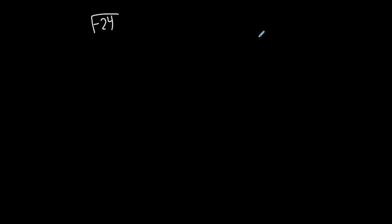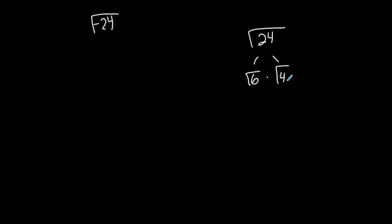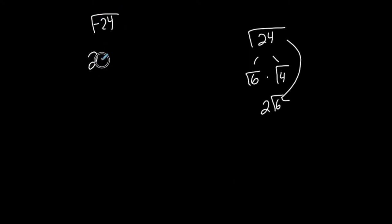These can get more complicated. For example, the square root of negative 24. Let's talk about the square root of 24 first, because 24 is not a perfect square. However, 24 is also the square root of 6 times 4. Since 4 is a perfect square, it can simplify further: the square root of 4 is 2, so the square root of 24 is 2 times the square root of 6. For the square root of negative 24, that negative comes out and becomes an i, giving us 2i times the square root of 6.